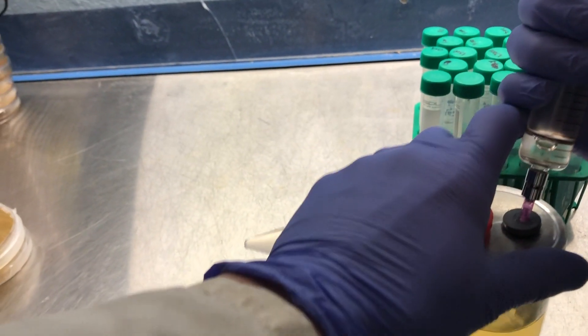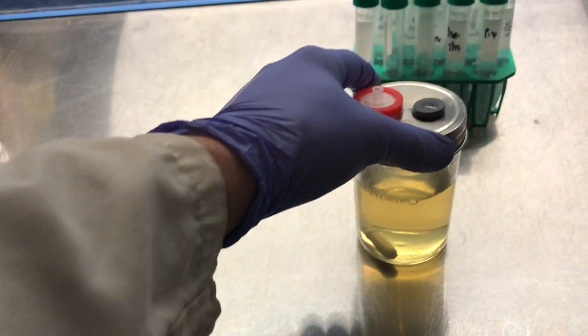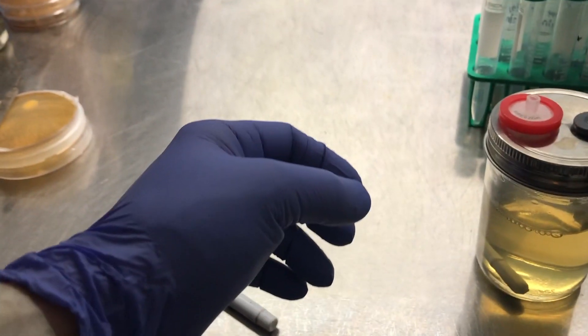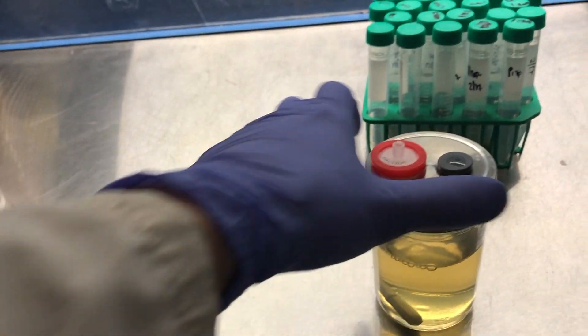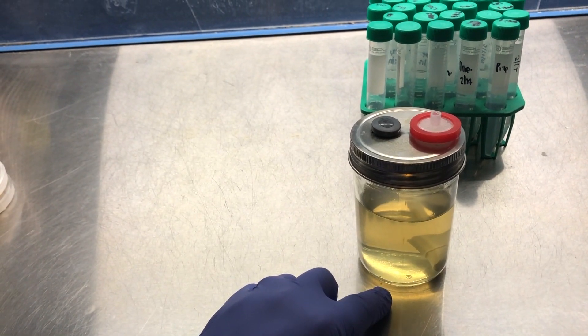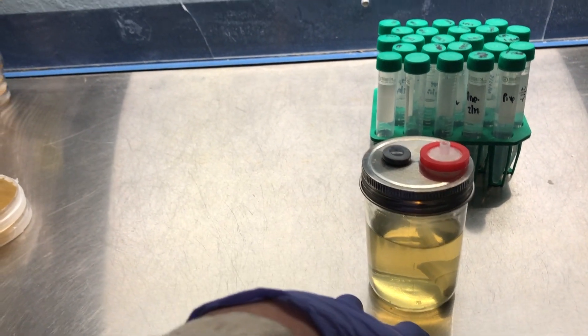Alright, so now I'm just going to be adding the 2 mils of the spores. There should be about 4 CFUs of viable spores in that solution, maybe a little bit more because the spores have been hydrating in that water. Then the spores should begin to germinate in the next 24 hours or so.